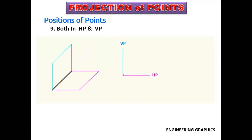In the ninth case, the point is in both HP and VP. Both elevation and plan will fall on the intersection of planes. Elevation and plan should both be drawn on the XY line.